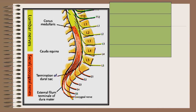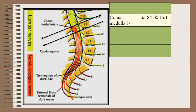Coming to anatomy first, the spinal cord ends at the level of the lower border of L1, and there is a tapering end of the spinal cord which is formed by S3, S4, S5, and CO1 spinal segments, which lies in front of L1 and is called the conus medullaris.